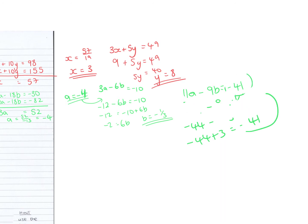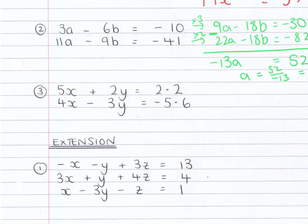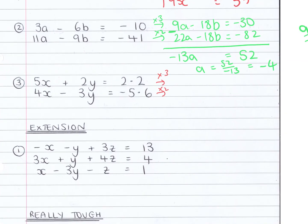So for the third one, if I'm going to multiply the top equation by 3, I get 15x plus 6y equals 6.6. And if I times the bottom equation by 2, I get 8x minus 6y equals minus 11.2.